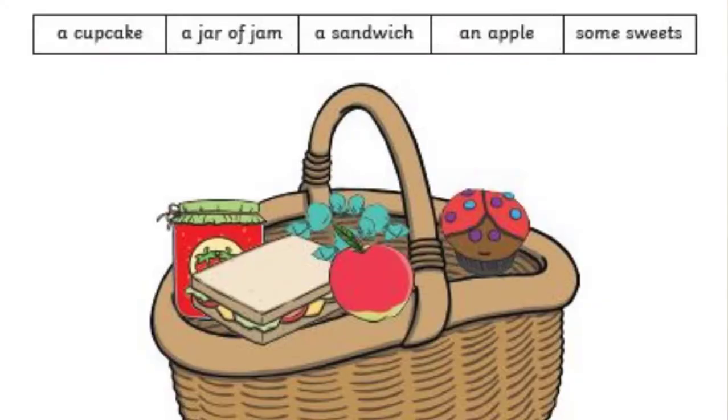We have another activity here — using commas in lists again. As we know, Little Red Riding Hood — everyone read this book? We know that she has a basket and she has some yummy stuff inside. Now we have some items that she has in her basket. You will write a sentence using these items and using commas in between them. She has a cupcake, a jar of jam, a sandwich, an apple, some sweets. She is going to give all these items to her granny. You need to write a sentence on your own.